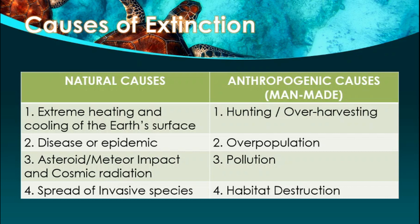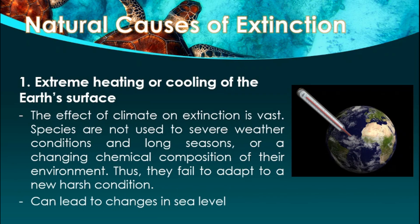The first natural cause is extreme heating or cooling of the earth's surface. The effect of climate on extinction is vast. Species are not used to severe weather conditions, long seasons, or a changing chemical composition of their environment, so they fail to adapt. Extreme heating can lead to changes in sea level as melting polar ice caps discharge more water into the sea each year, and projected sea level rises will submerge more than 10,000 islands, displace human communities, and wipe out many unique species.